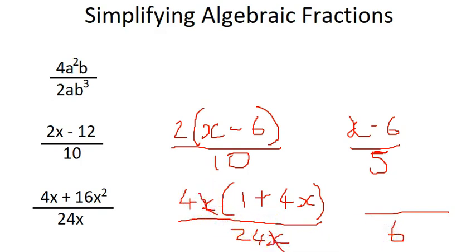And the x's we can cancel. So cancel those x's, they just disappear. We don't need the bracket anymore, because I've cancelled that 4 and cancelled that down to a 6. So I can just put my 1 plus 4x nicely on the top.